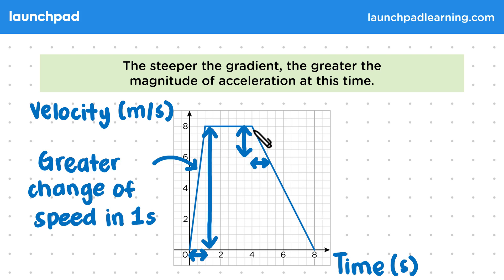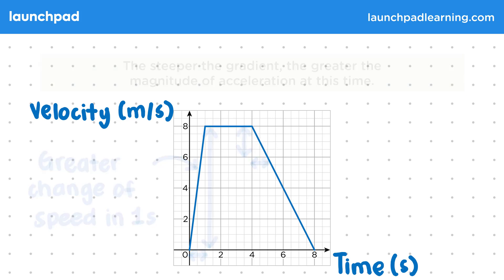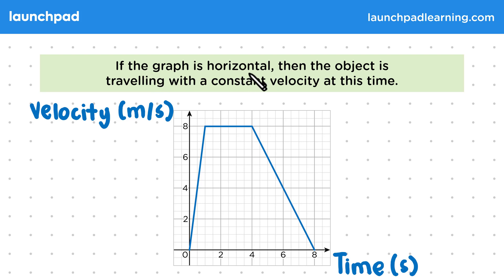Now what about this middle section where the graph is flat? What's happening here? If the graph is horizontal, then the object is travelling with a constant velocity at this time. Because the middle section is flat, it has the same y value throughout. And since the y value isn't changing, we can say that we have a constant speed here.